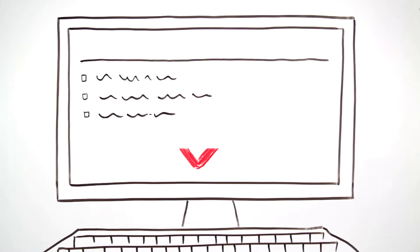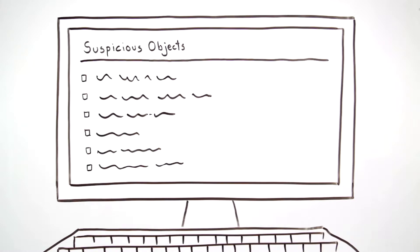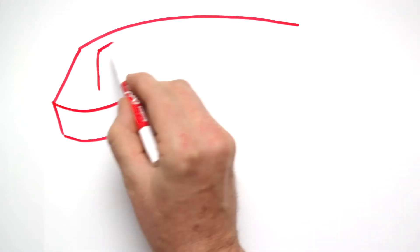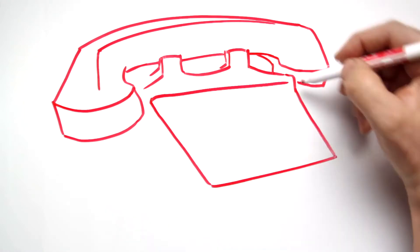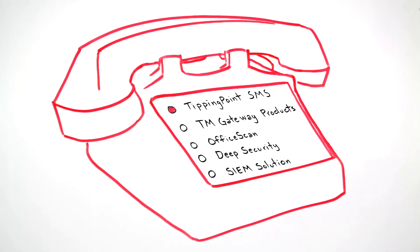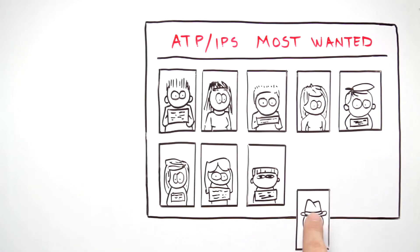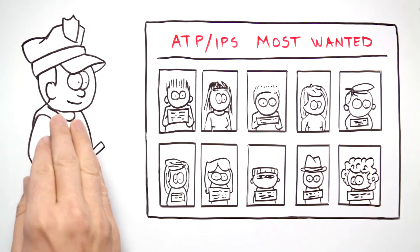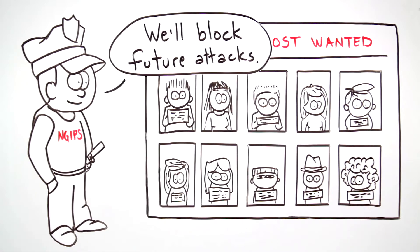So, how does it work exactly? A subset of IOCs, called suspicious objects, are generated during the analysis. This can include IP addresses, FQDNs, URLs, and SHA-1 hash values. The detection of these suspicious objects allows us to quickly make unknown threats known and then share them with the Tipping Point Security Management System or other Trend Micro or third-party perimeter devices. The suspicious objects are also placed into a reputation database and shared with the NextGen IPS sensors so you can block future attacks to your network.